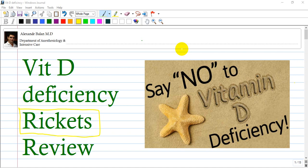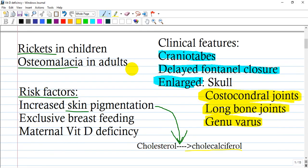Vitamin D deficiency or rickets - just a few points you have to know to establish a diagnosis. Rickets occurs in children and osteomalacia in adults. What are the risk factors?